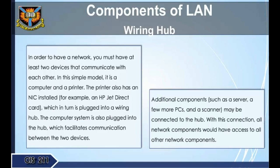To have a network you must have at least two devices that communicate with each other. In a simple model, this is a computer and a printer. The printer also has a NIC installed — for example, an HP JetDirect card — which is plugged into a wiring hub. The computer system is also plugged into the hub, which facilitates communication between the two devices.